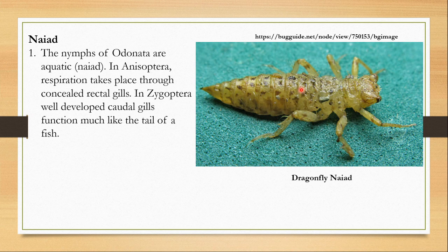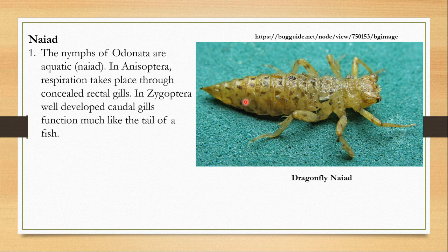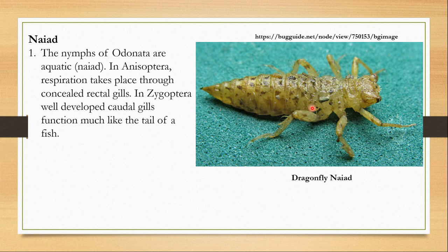Once the eggs hatch, naiads come out. Dragonfly naiads have a spindle-shaped body with prothoracic legs. In Anisoptera (dragonflies), respiration takes place through concealed rectal gills inside the rectum. In damselfly naiads, the gills are external caudal gills that look like fish tails. So if you see a naiad without visible external gills, it is a dragonfly naiad; if gills are visible outside, it is a damselfly naiad.